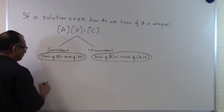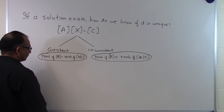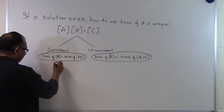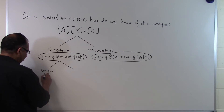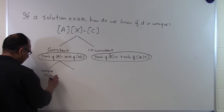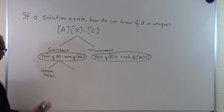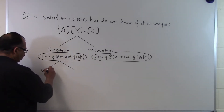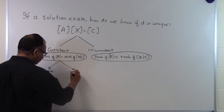Those are the only two possibilities. In the consistent system of equations we have two further possibilities. One possibility is that you are going to have a unique solution, because consistent system of equations means that you have a solution — but it doesn't tell you whether you have one solution or infinite solutions. So there are two possibilities: unique solution or infinite solutions.